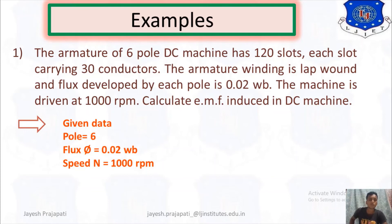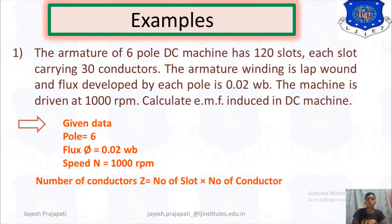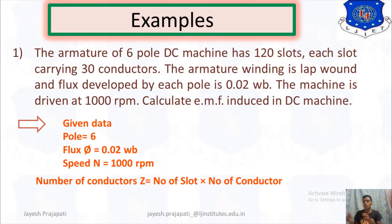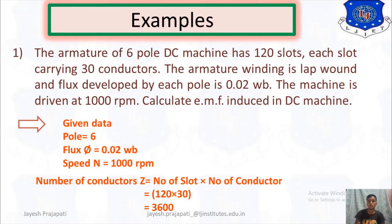The EMF equation is E equals P·Φ·N·Z divided by 60A. The number of conductors Z equals number of slots times conductors per slot, so Z equals 120 times 30 equals 3600 conductors.